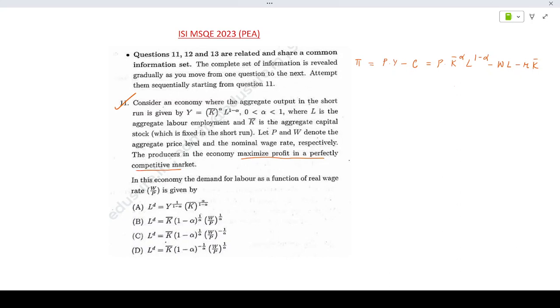Now in order to determine the labor demand, the firm will maximize profit. The profit maximizing choice of labor would be obtained by taking del π by del l equals 0. So that is P into k bar to the power alpha, 1 minus alpha, l to the power minus alpha, minus W equals 0.